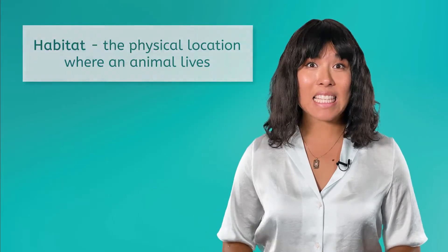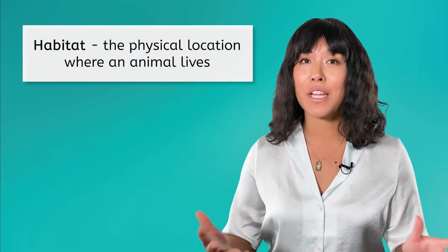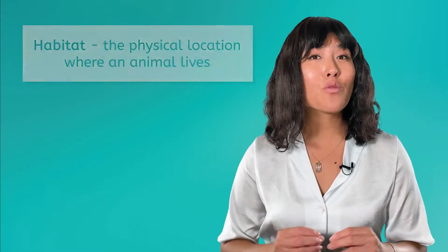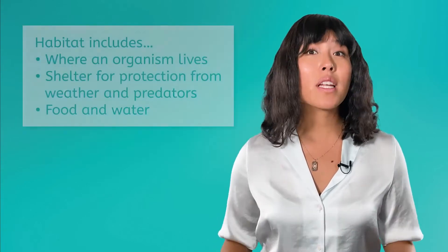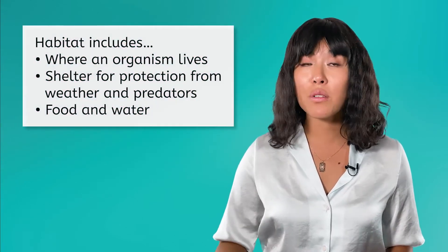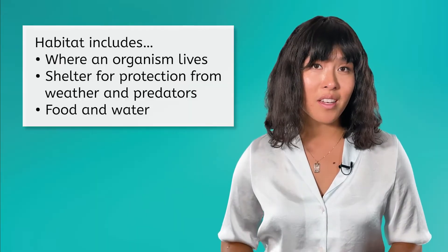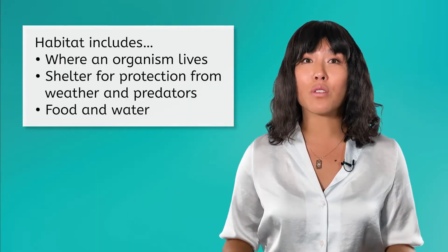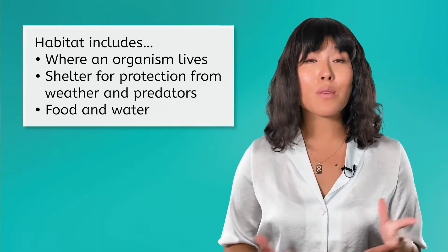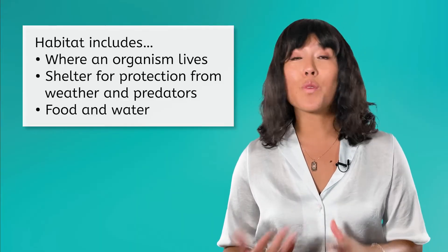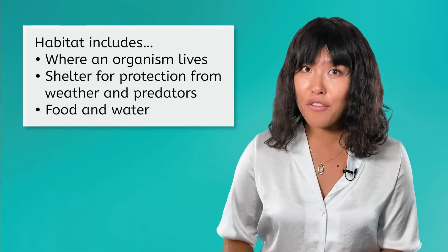An organism's habitat is the physical location where an animal lives. Let's look at the red fox. The red fox lives all over the world in areas such as the edges of forests and grasslands. However, this is just one small part of the red fox's habitat. An organism's habitat also includes shelter, food, and water. Shelter is the space an animal uses for protection from weather and predators. It is also a space for them to eat, sleep, and raise offspring.